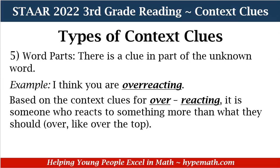The next context clue is word parts — there is a clue in part of the unknown word. An example is: 'I think you are overreacting.' You can break it apart. Whenever you see a large word, it may have a prefix or suffix that is familiar, helping you figure out the word. Overreacting means someone who reacts to something more than they should — over the top. The prefix is 'over,' meaning over the top, and the root word of 'reacting' is 'react.'